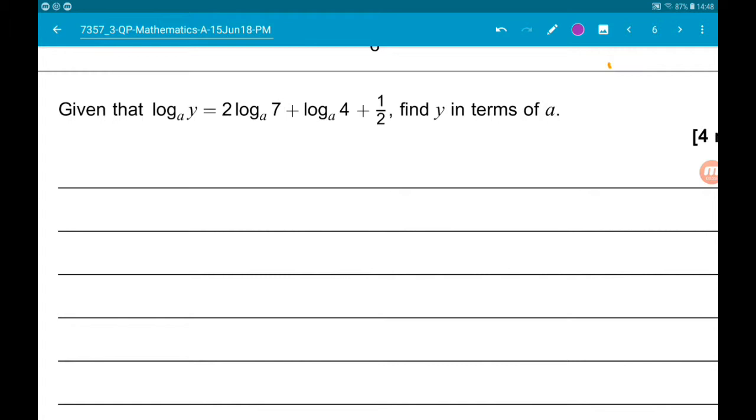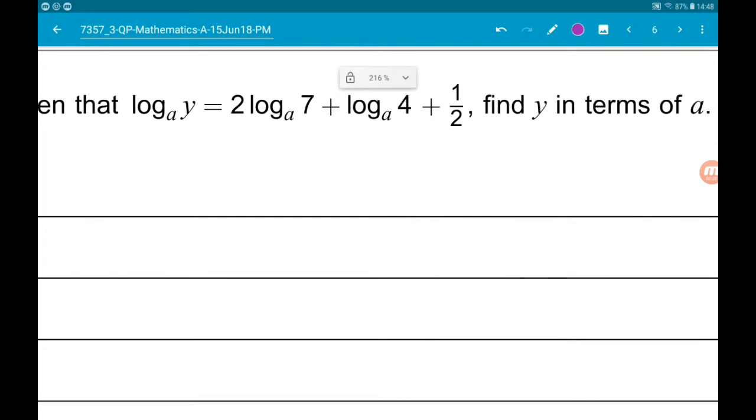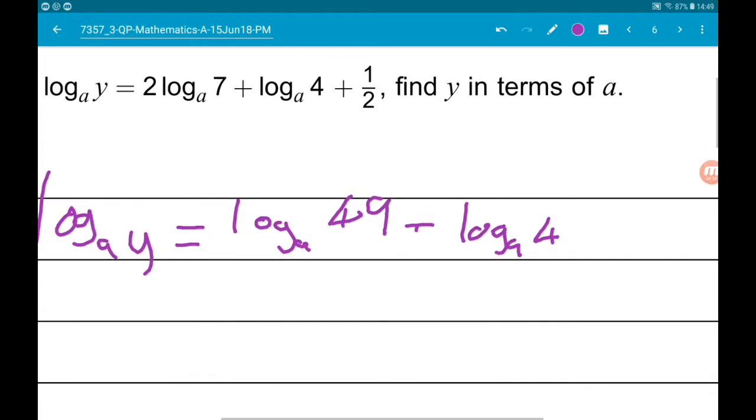So on the right we can simplify those two log terms. We first will say log y is log of 7 squared using the power rule, so that's log 49 add log 4 add one half.